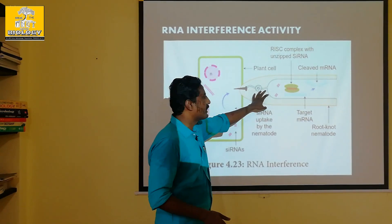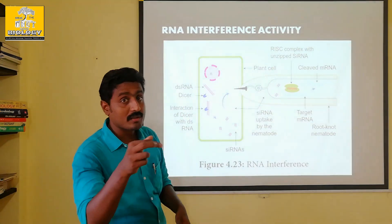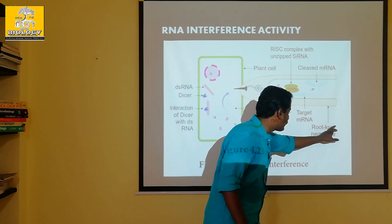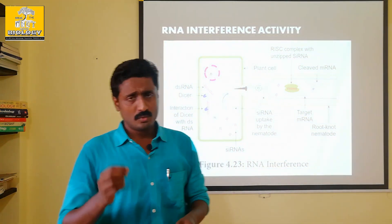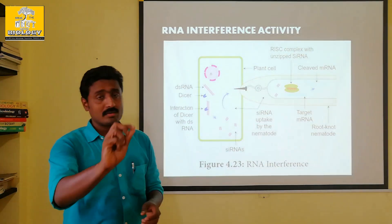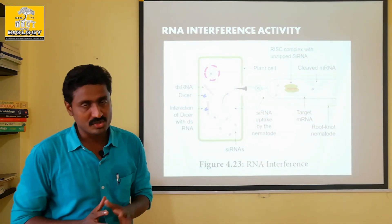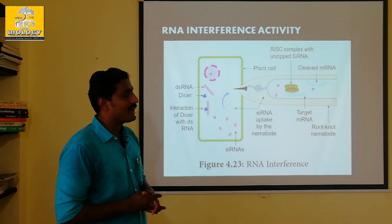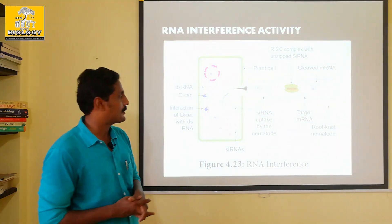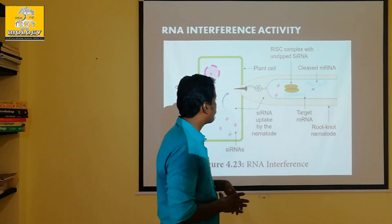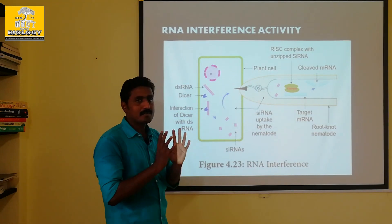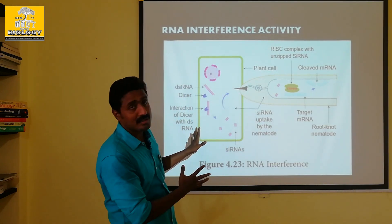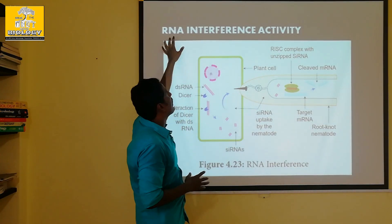If you have a single-stranded RNA entering the host, it forms a single-stranded structure. What is a root-knot nematode? It is a type of plant pathogen — a plant affected by root-knot nematodes. When the single-stranded RNA enters, it forms a double-stranded structure, and the cell fights against it using RNA interference.